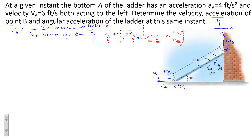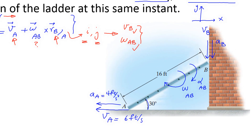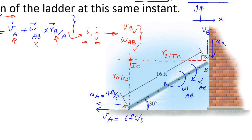I know the direction of velocity at point B and also at point A. If I draw the normals to the velocities — normal to VB and normal to VA — their intersection gives me the IC point. We call this distance R_B/IC and this one R_A/IC. We know the velocity of point A is 6 feet per second, so from the IC method: VA equals R_A/IC times omega_AB. What is R_A/IC?